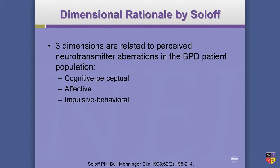Here's the clinical dimensional type thing. I showed you the biological model — the harm avoidance type thing. This is more clinical, what you see on the outside, the morphological type. So Soloff's model, when you're dealing with particularly the borderline personality patient, or any personality disordered patient, is: what is their main issue — cognitive perceptual?